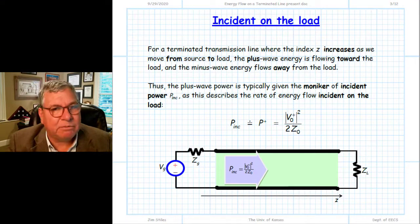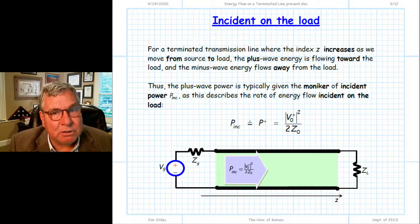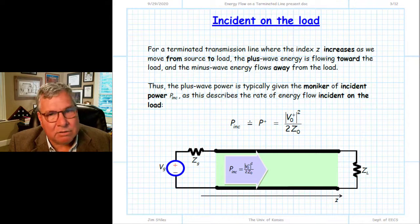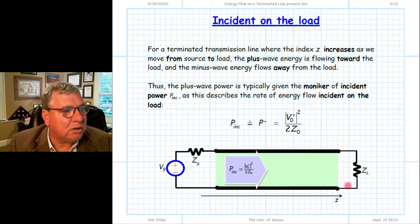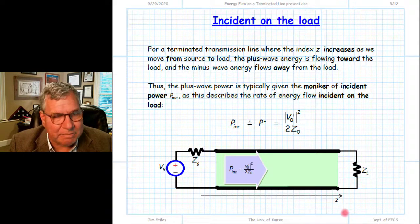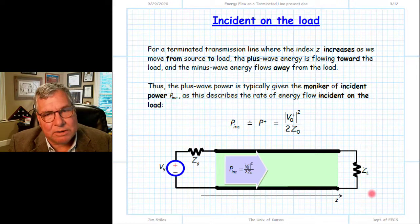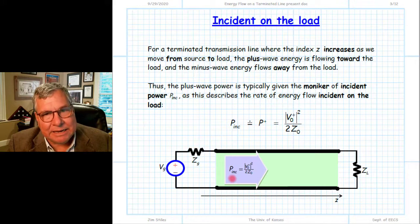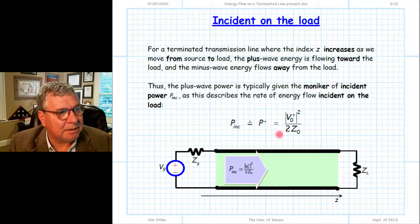Since we now have a complete circuit with both source and load on our transmission line, we're going to change the notation. Instead of calling it the plus wave — the electromagnetic wave propagating in the direction of increasing z — we are now going to describe the wave in relation to the load. We call the plus wave the incident wave, meaning it's incident on the load at the end of the transmission line. So instead of P+, we call it P_incident. It's the same thing with the same value; we're just changing the name.